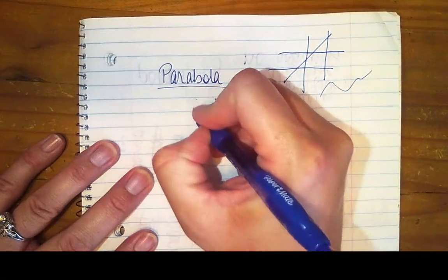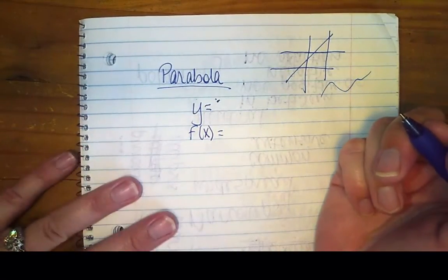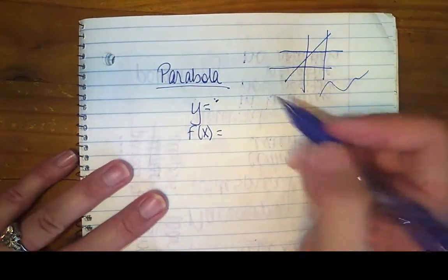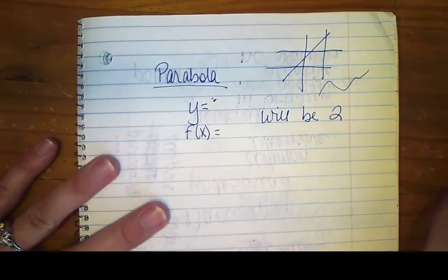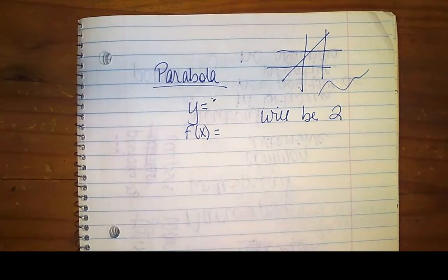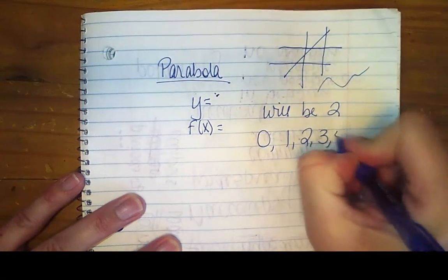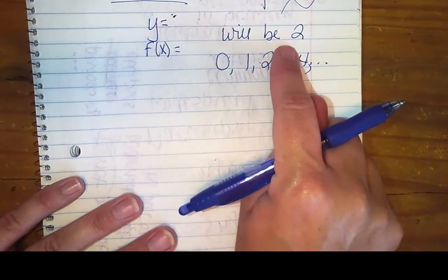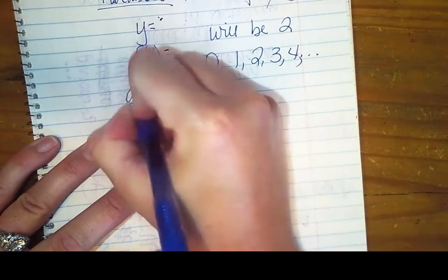So how do we know if something is a parabola? We're going to have y equals, or f of x equals, and the biggest exponent after that equals sign — after you've solved for y or f of x — the biggest exponent will be 2. Because we're using polynomials, your exponents can only be counting numbers like 0, 1, 2, 3, 4, and so on. So the biggest exponent you can have is a 2. Once you have a 2 as your biggest exponent, when you graph it, it'll make a parabola. So we call these quadratic equations.